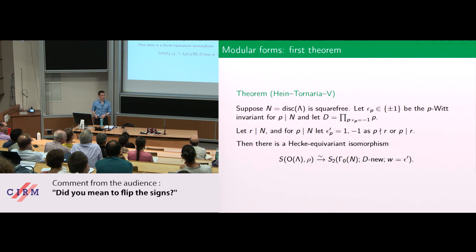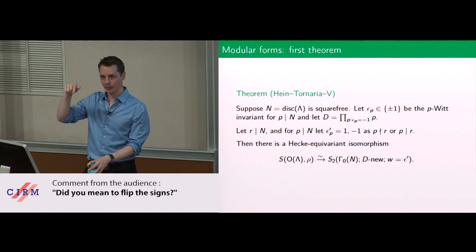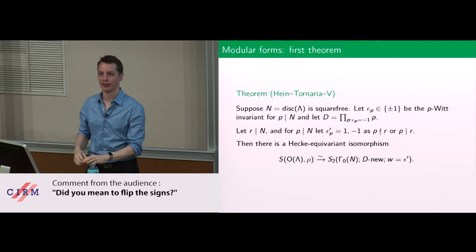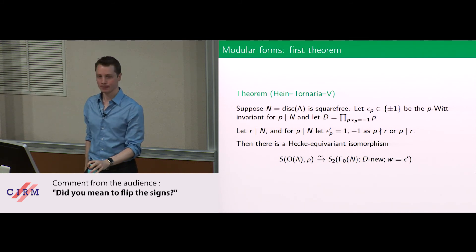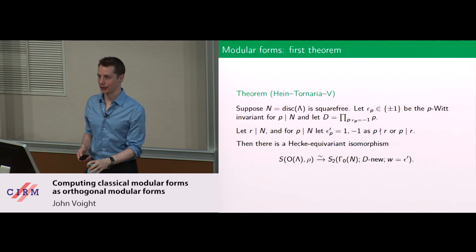You said you're flipping the signs — so you want epsilon_p prime equal to minus epsilon_p? Yes, I'm sorry about that. The slide should not read epsilon_p prime equals one or minus one; it should be epsilon times epsilon_p. I meant to switch the signs there. Thanks.